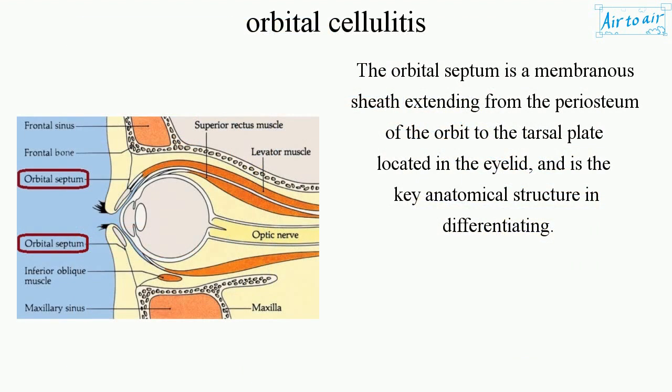The orbital septum is a membranous sheath extending from the periosteum of the orbit to the tarsal plate located in the eyelid, and is the key anatomical structure in differentiating the two conditions.